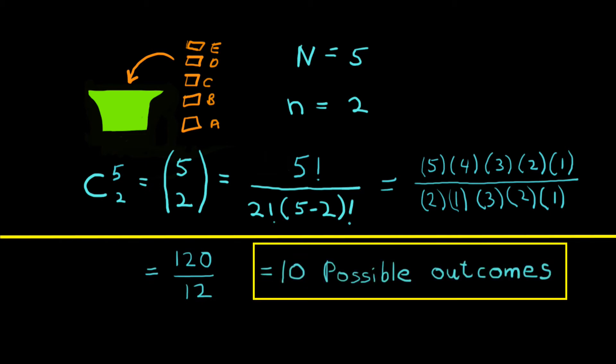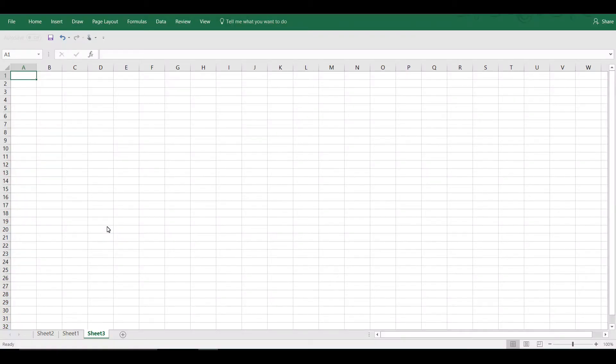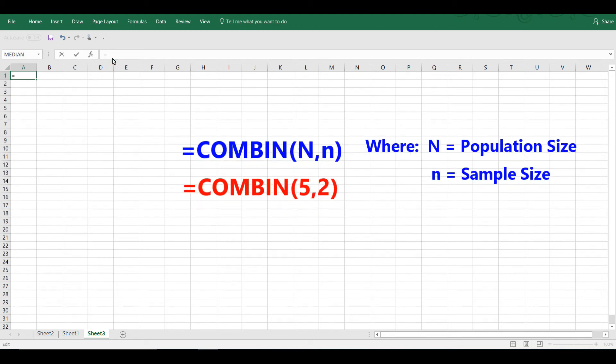Now to do this using Excel, the formula is equal COMBIN, that's C-O-M-B-I-N, and then you put the number, and you can see there it says number comma number chosen. So the number comma the number chosen is really the same thing as big N and little n.